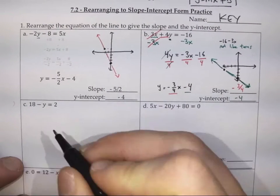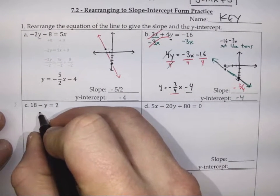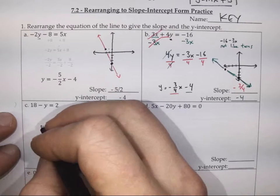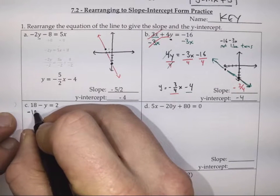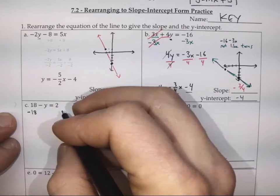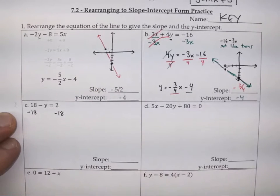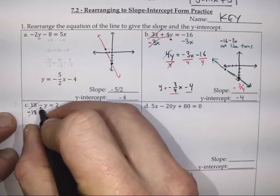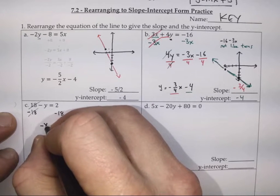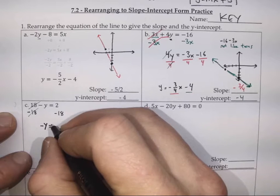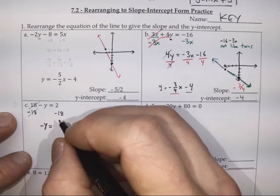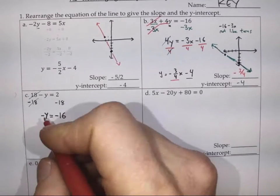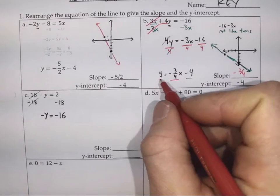Question 2 asks us to isolate y. We've got this 18 on its side, so if we can get rid of the 18, maybe we'll be good. We'll subtract 18 to remove this positive 18 from both sides. That cancels out this 18. What's really important is that leaves us with a negative y, equal to 2 take away 18, which is negative 16. But we haven't isolated y — we've got a negative y and we actually just want a y.